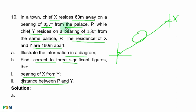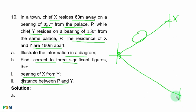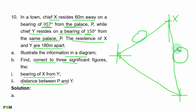From the same palace, Chief Y resides on a bearing of 150 degrees. This value is in the second quadrant in the clockwise direction, that is from the north. Somewhere here is 150 degrees, so let's place Chief Y there. Then we join the distance between Chief S and Y together, and we have 180 meters as given in the question.